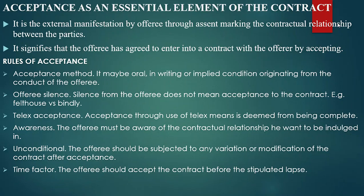Welcome to a lesson on acceptance as an essential element of the contract. Acceptance can simply be defined as an external manifestation by the offeree through assent, making the contract between the parties. It signifies that the offeree has agreed to enter into a contract with the offeror by accepting.